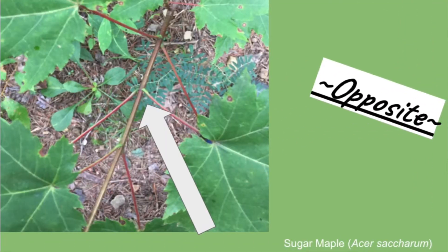Now we're going to be looking at characteristics of broad leaves. An important characteristic to note is if the leaves are arranged opposite, alternate, or whorled on the stem. This maple is opposite. If you look at where the arrow is pointing, you'll see that the leaves are attached across from each other at the node, and that is what we call opposite.